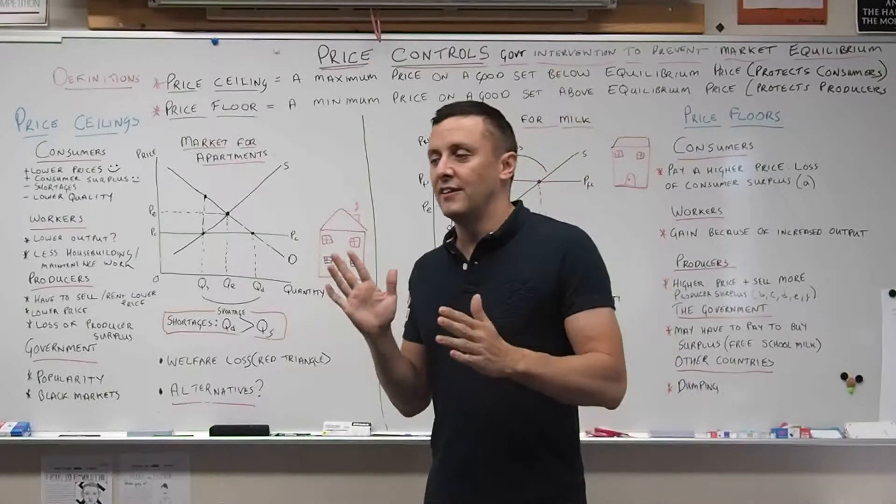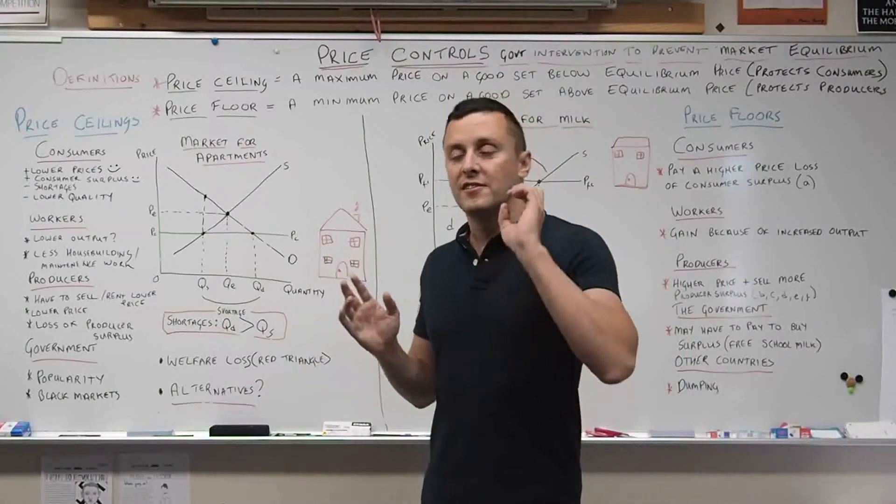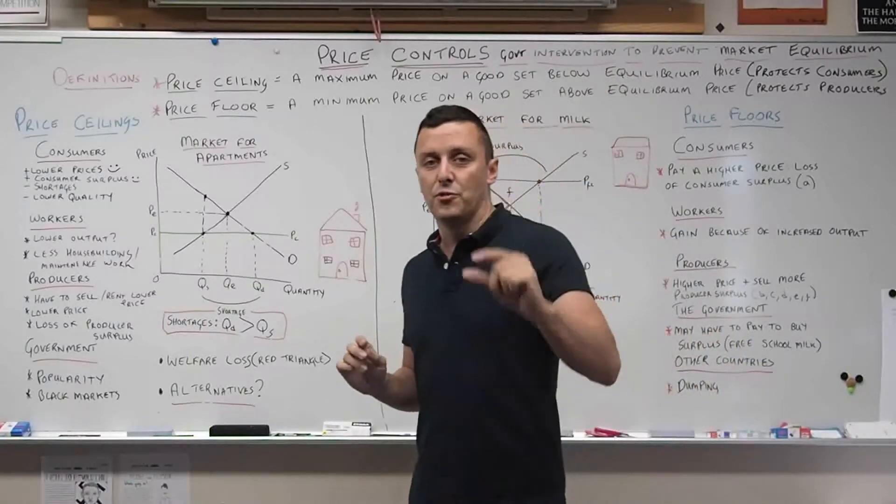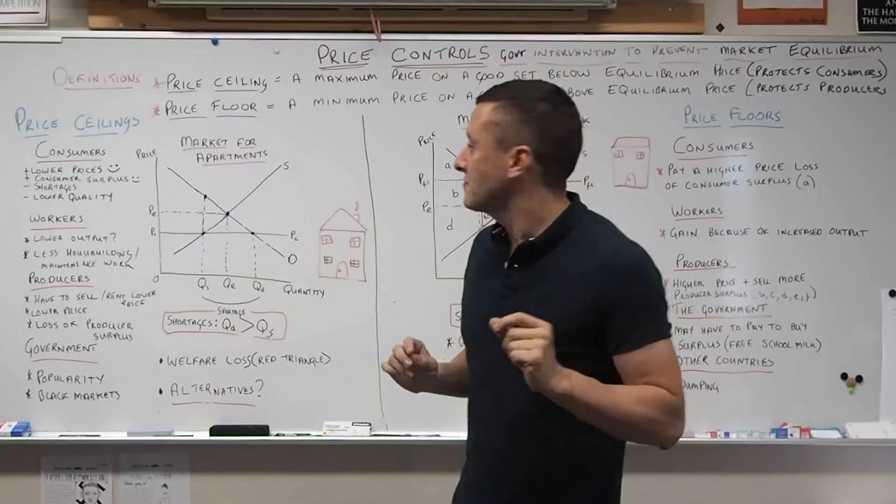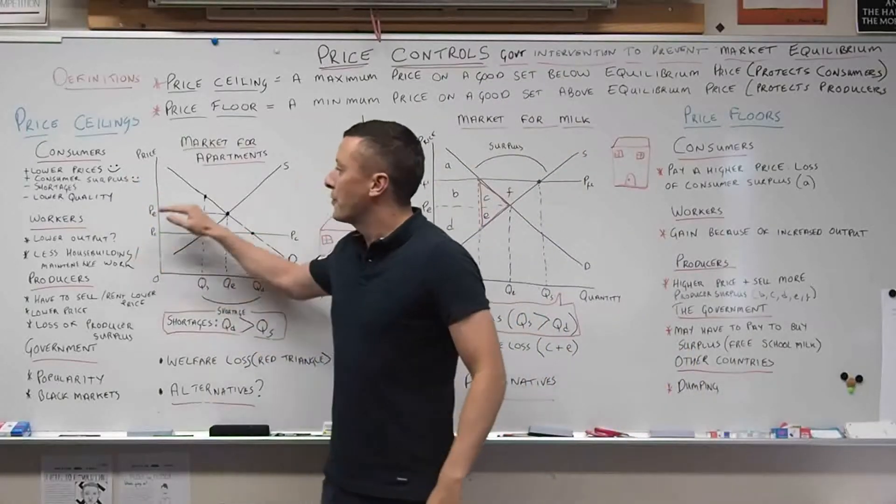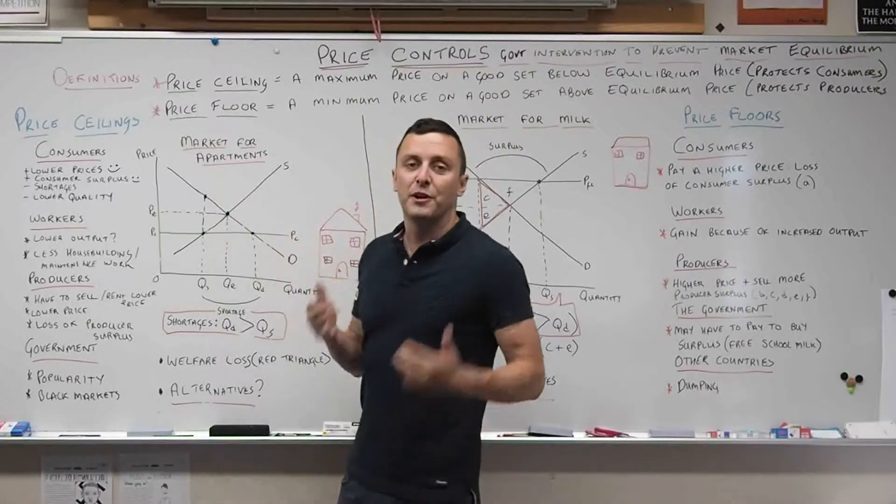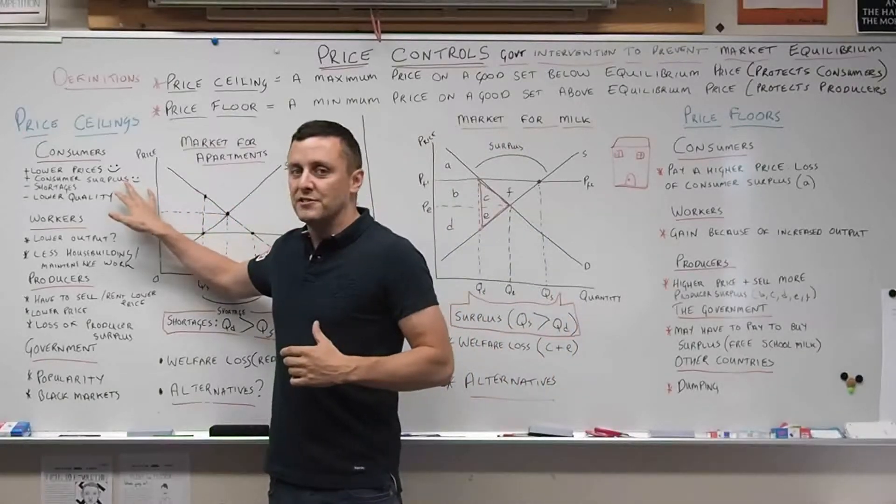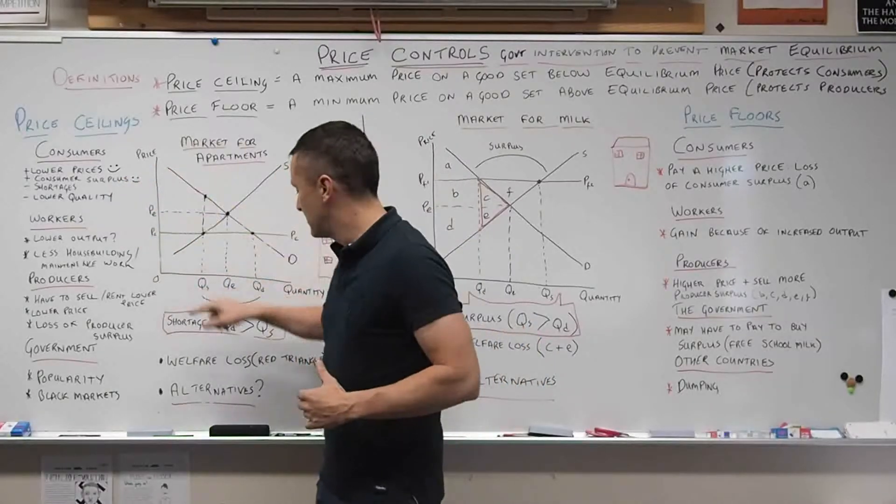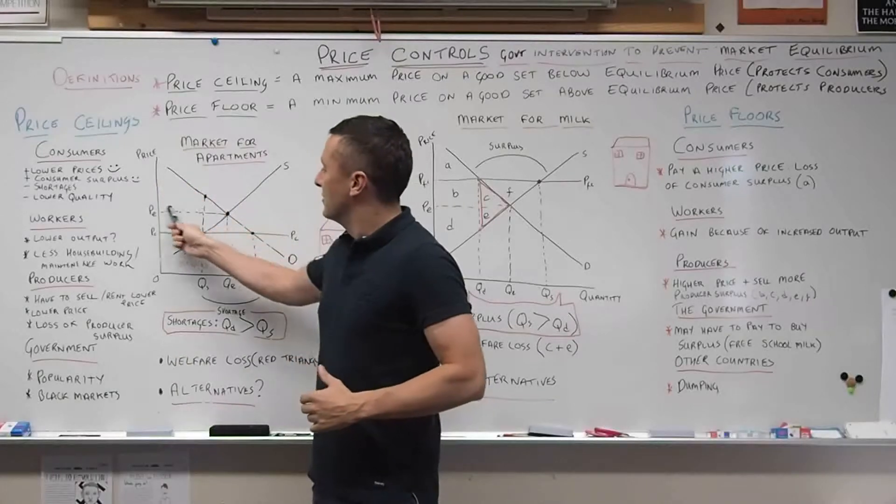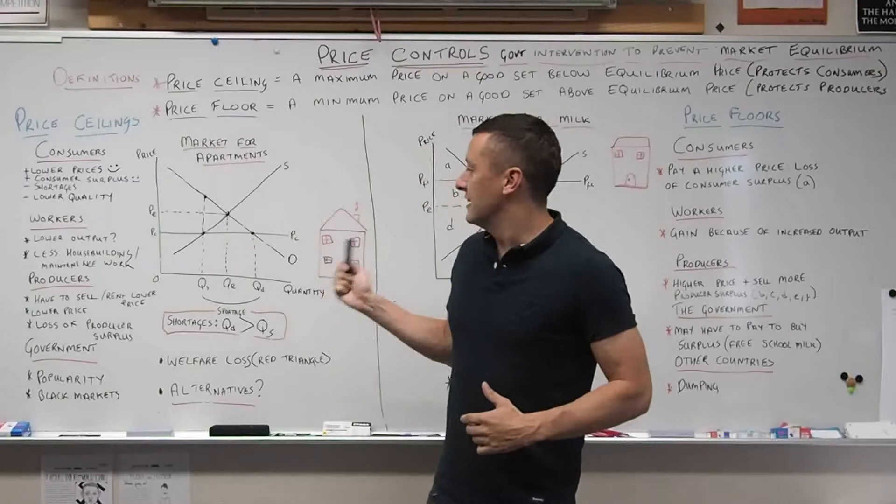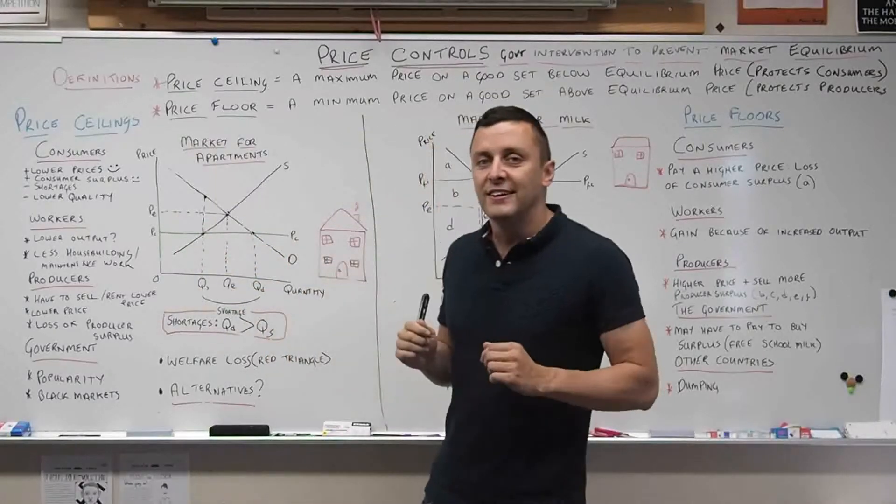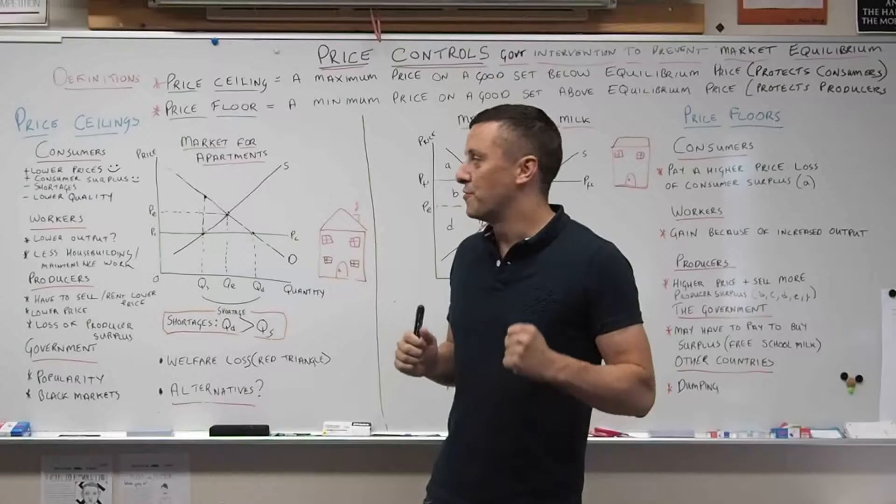It's very important for all exam boards to think about the stakeholders and how price ceilings affect each group. So first, let's think about consumers. Of course, the price is lower than equilibrium, so they're going to be happy. The consumer surplus has also increased. Consumer surplus at original equilibrium is this triangle here, but with the price ceiling introduced, the triangle is much larger.